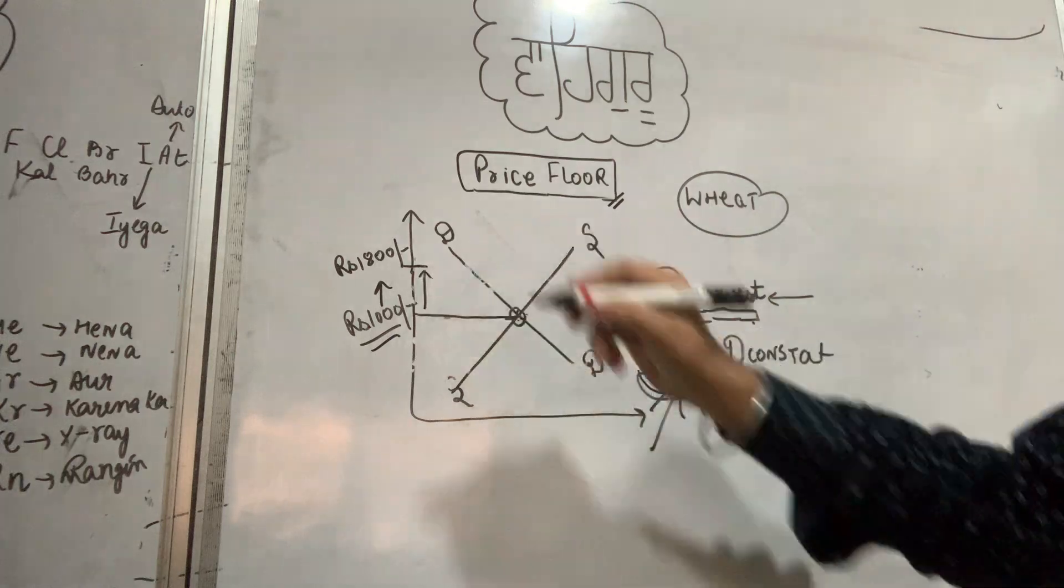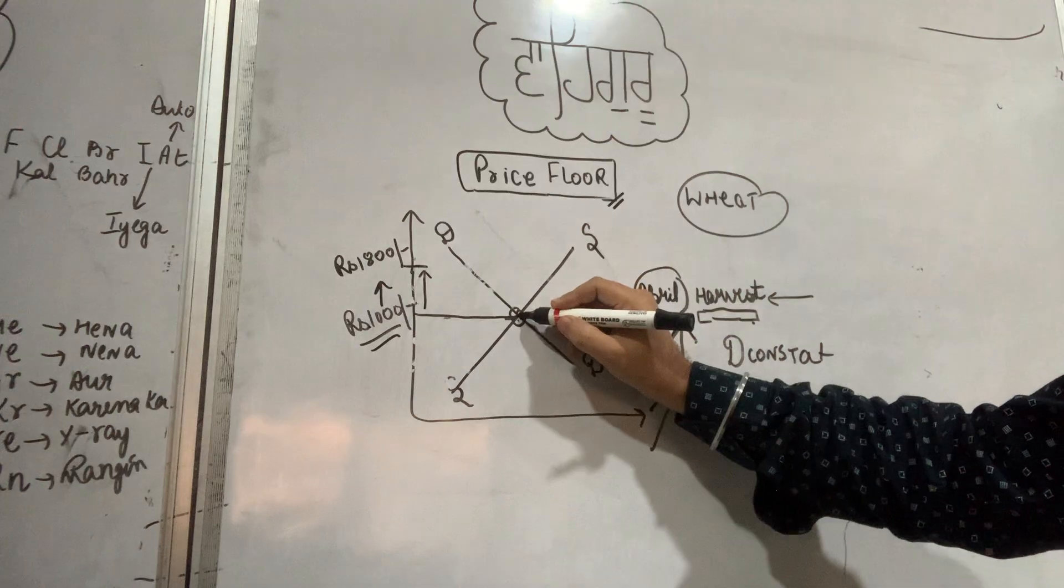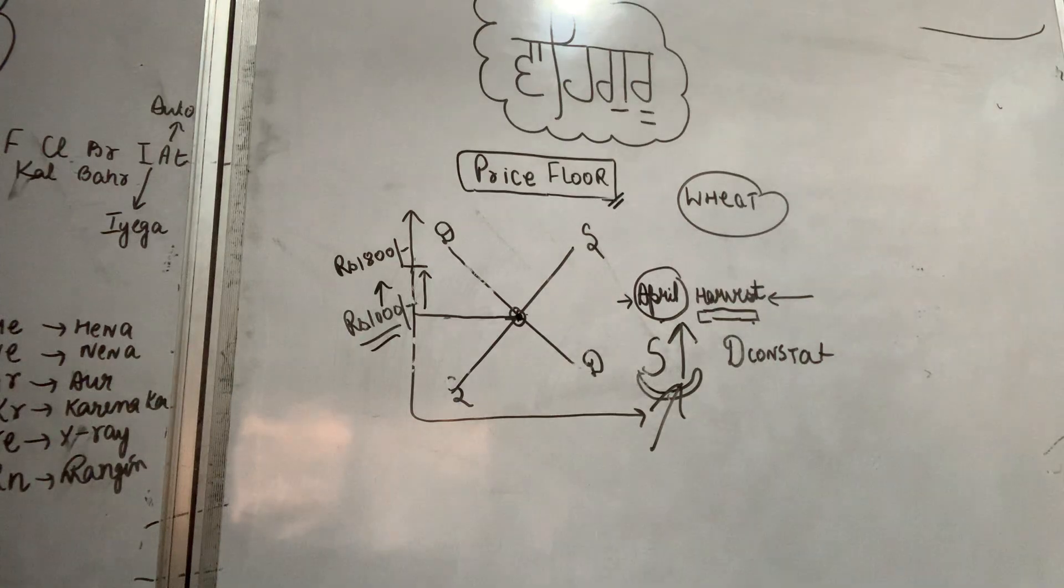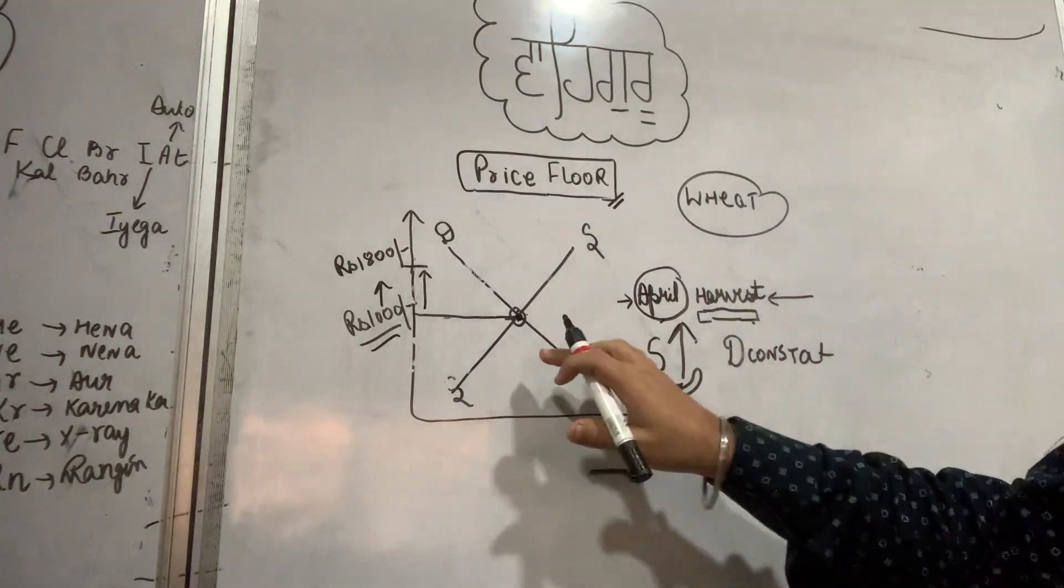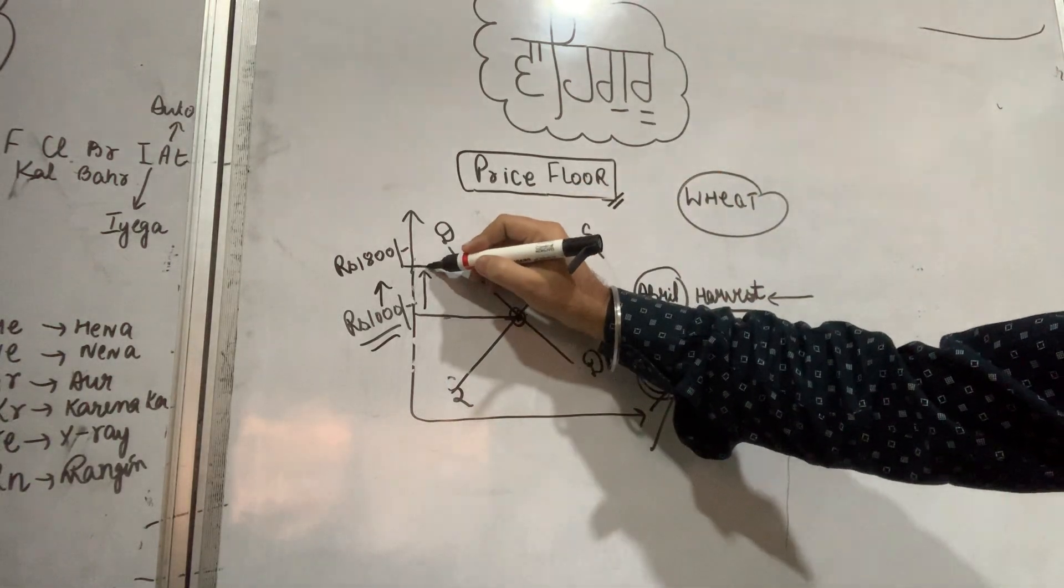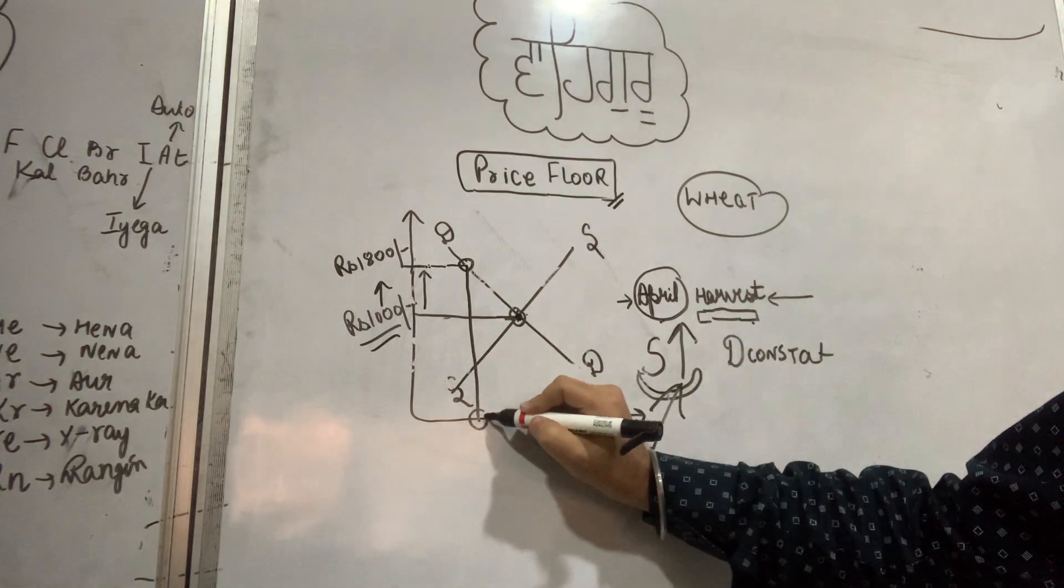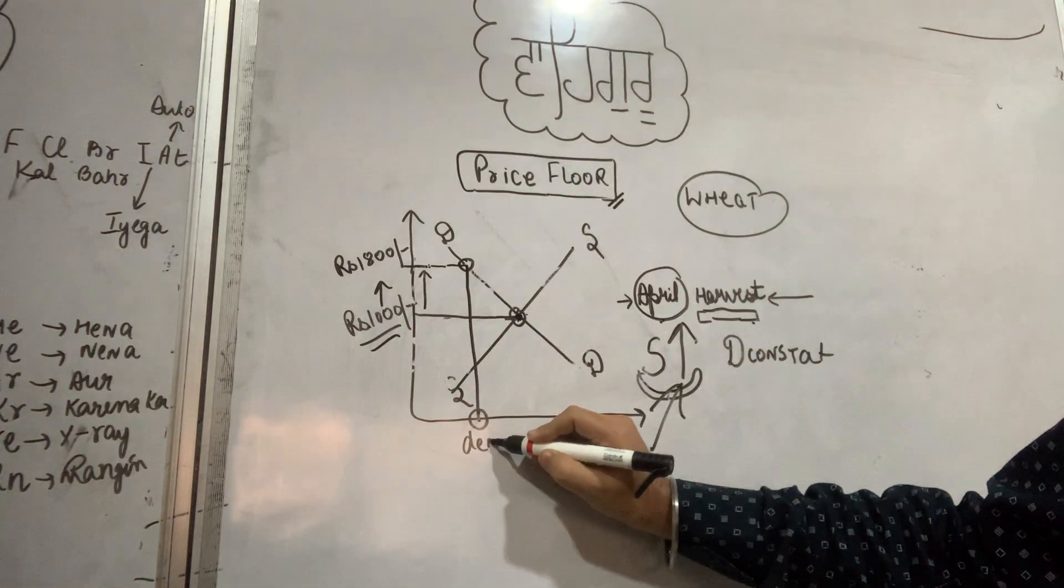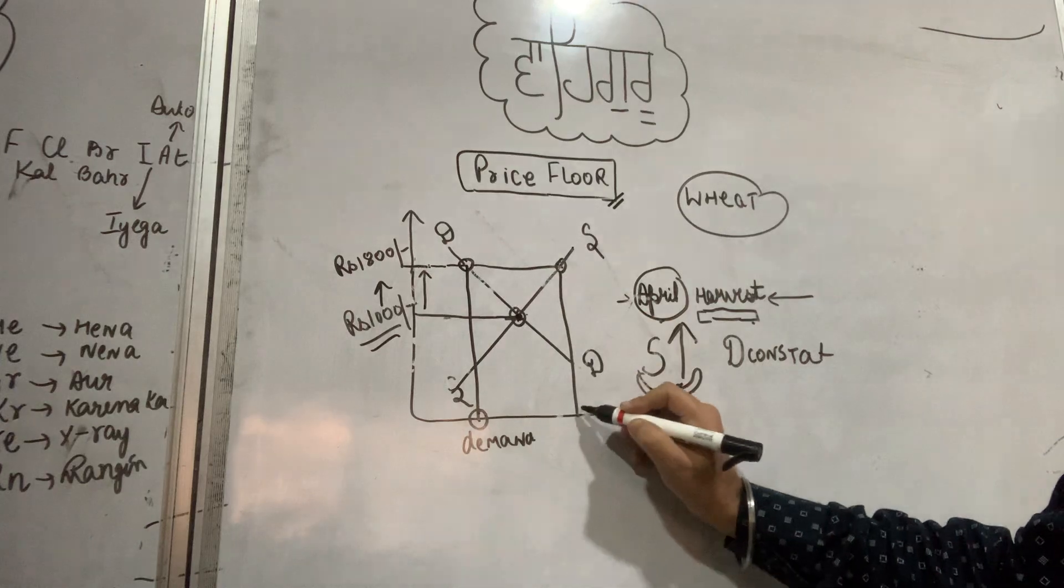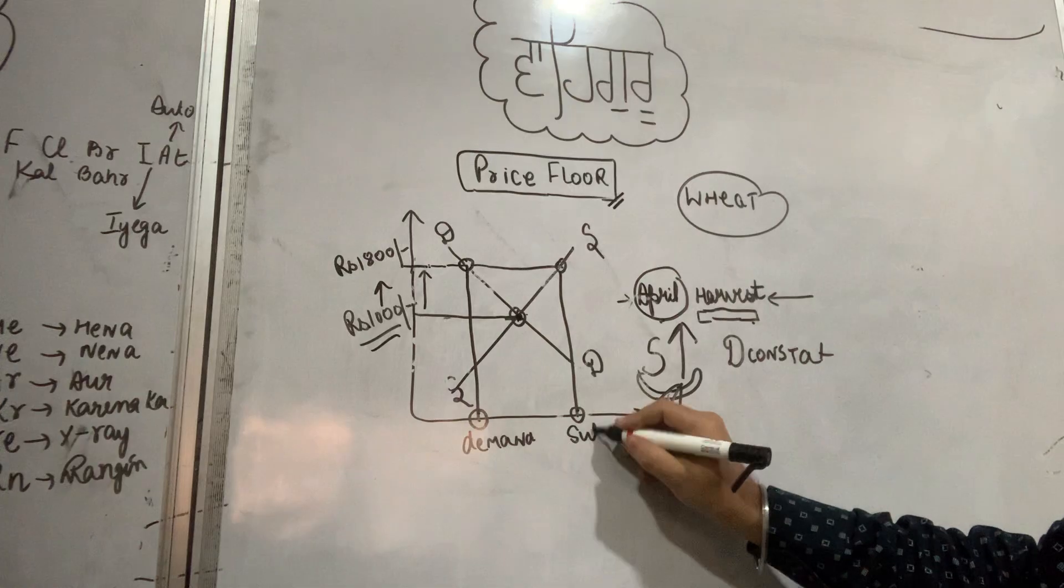This is the price floor. If the government hadn't intervened, it would be 1000 rupees. At 1000 rupees, demand and supply are equal, no problem. But at 1000 rupees, farmers aren't making profit and are suffering losses. So the government raises it to 1800 rupees. At 1800 rupees, look at the demand - demand is this much. And at 1800 rupees, supply is this much.